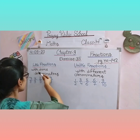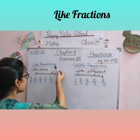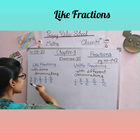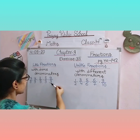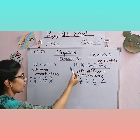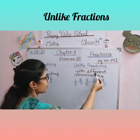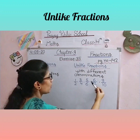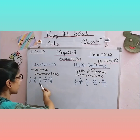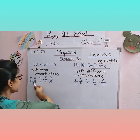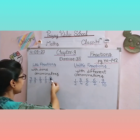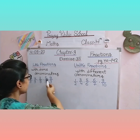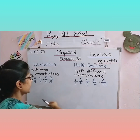Fractions with same denominators are known as like fractions. Like fractions mein denominator same hote hain — ek digit sab mein common hota hai denominator ka. The example of like fractions is 7/9, 4/9, 2/9, 5/9, 8/9 — in mein denominator 9 sabka same hai aur numerator alag alag hai.